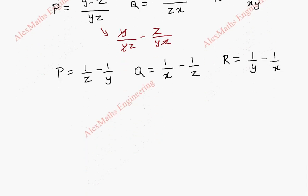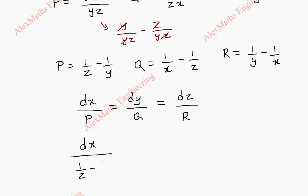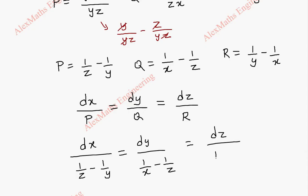Now, to get the solution, we have to solve dx/P = dy/Q = dz/R. This is dx/(1/z − 1/y) = dy/(1/x − 1/z) = dz/(1/y − 1/x).